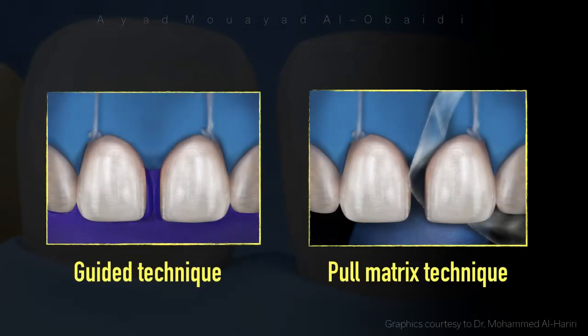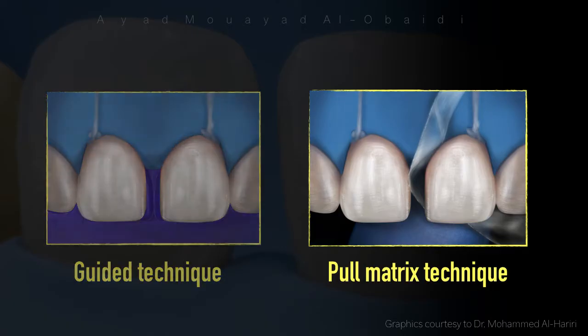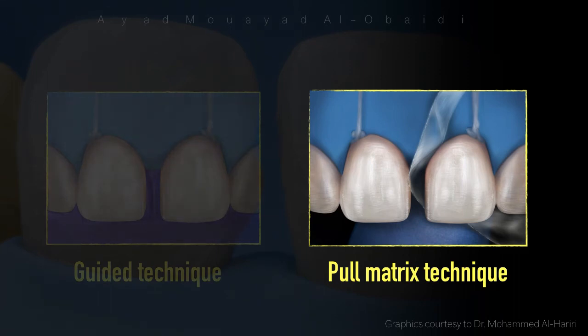There are many techniques for diastema closure. I prefer to use either the guided technique using a silicone index, or the pull matrix technique using a Mylar strip, which is my favorite technique. Today I will describe the pull matrix technique, and if you want me to describe the guided technique, please write it down in the comments.